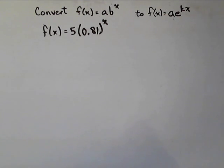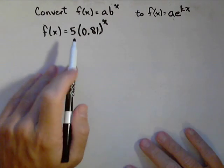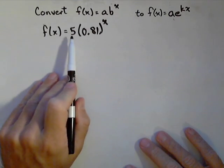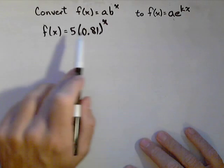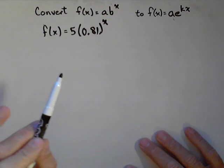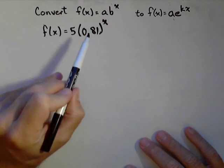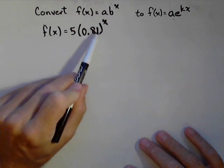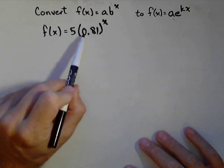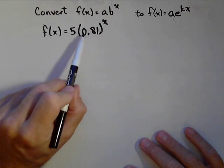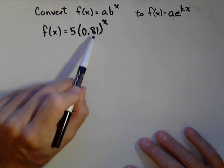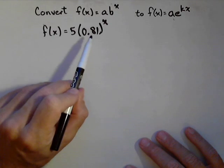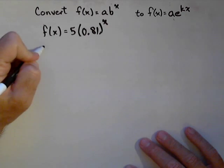We'll also talk about the different information we get. The initial value is the same in either form — notice it's A and it's A — so we already know the initial for the other form. What's important is to figure out what's going on with the base and the rate.